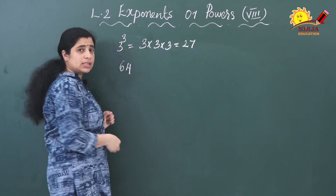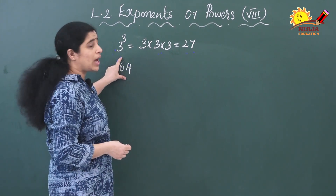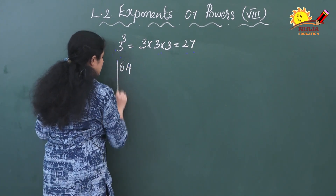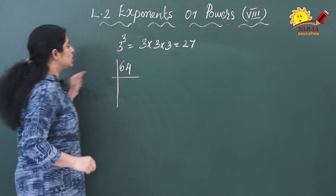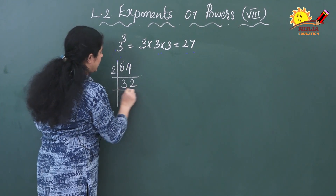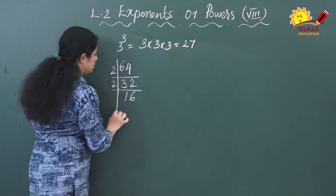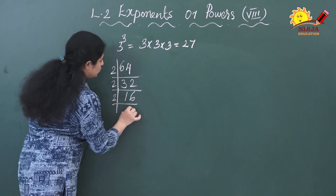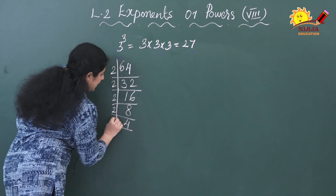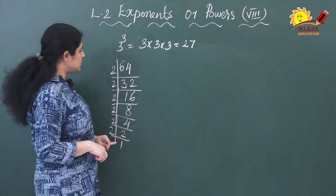Here we have 64. This we have to convert into exponential form. For that you have to do the prime factorization of this number. This number can be divided by 2: 32 by 2, again by 2 giving 16, again by 2 giving 8, again by 2 giving 4, again by 2 giving 2, again by 2 giving 1. This is the prime factorization of 64.